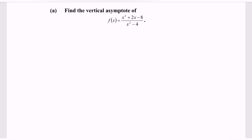Before we proceed with the vertical asymptote, kindly observe the situation. We notice that it is an improper fraction. So in order to proper the fraction, kindly make use of long division, where we have x² + 2x - 8 divided by x² - 4.